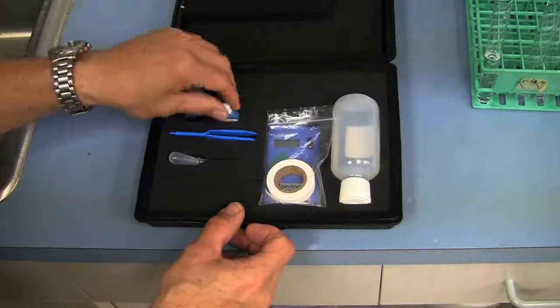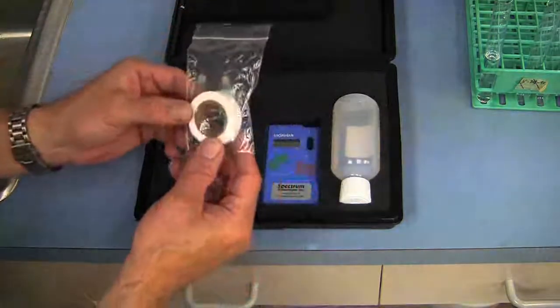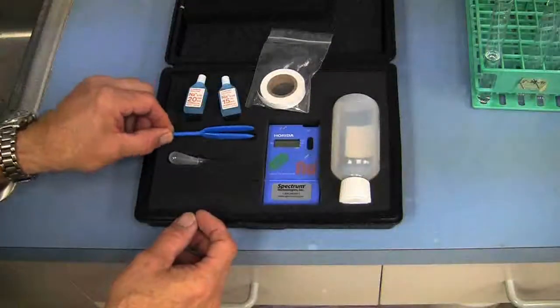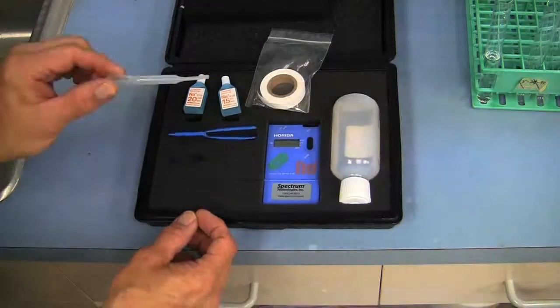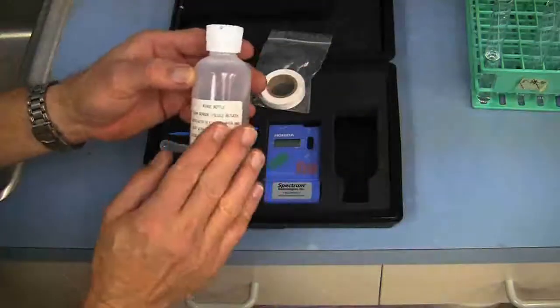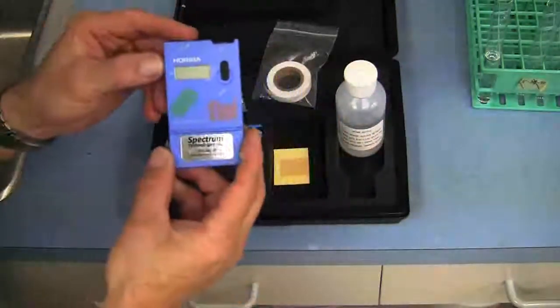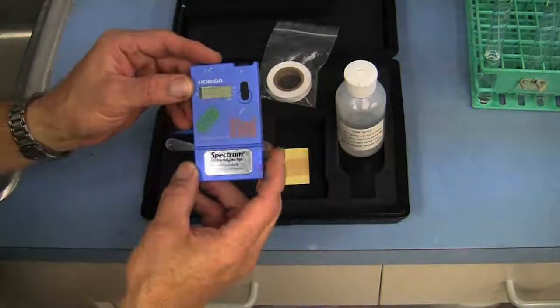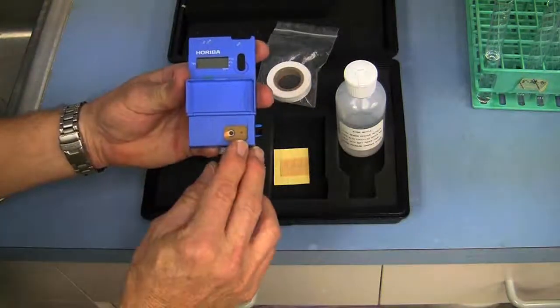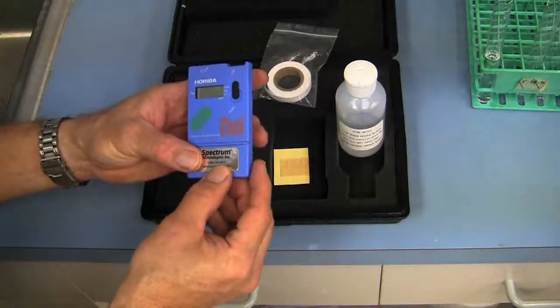It comes with a few components. There's standardization solutions, the test strip materials that you need, a pair of forceps, a dropper bottle, a bottle to put distilled water in so this is just a rinse bottle, and the actual meter itself, which is the CARDI meter. It has the sensors down in the bottom of the meter. So we'll walk through the steps on the calibration to start with.